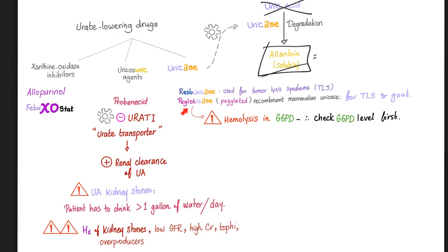Before prescribing pegloticase, check the G6PD level first. Always check G6PD level during the chronic period, not during an acute hemolytic attack, because during the acute attack the level will be falsely elevated, leading you to incorrectly conclude there is no G6PD deficiency.